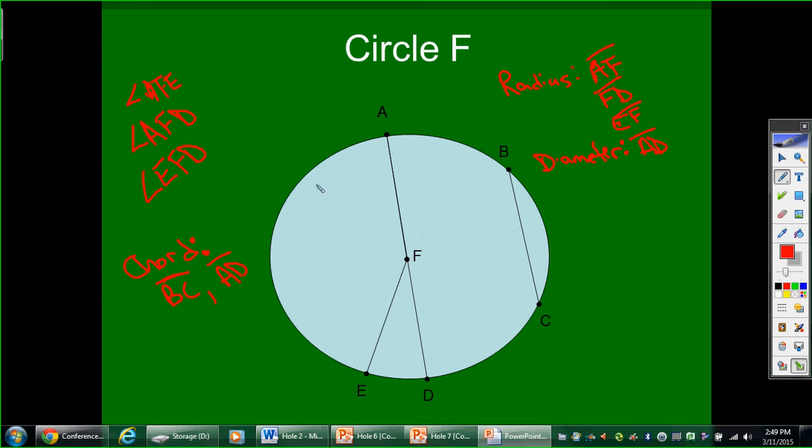An arc is a portion of the outer edge of the circle. So in this case, I have a lot of different arcs. I'm not actually going to write all of them. I'm just going to give you a couple. The first one would be arc AB. And I actually show that with the symbol, instead of a flat line above the AB, I put a curved line. And that shows I'm talking about arc AB.